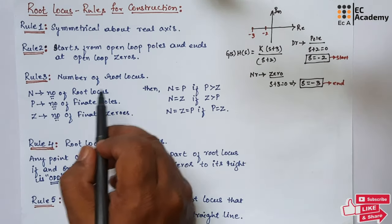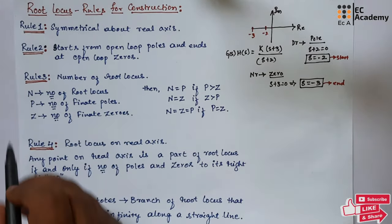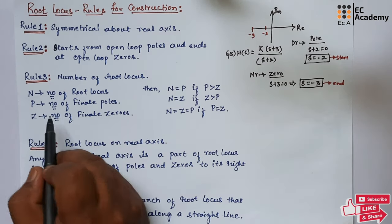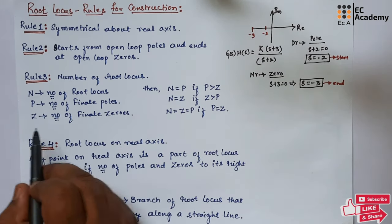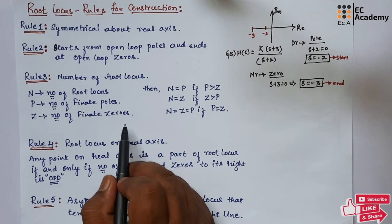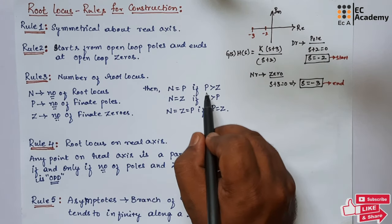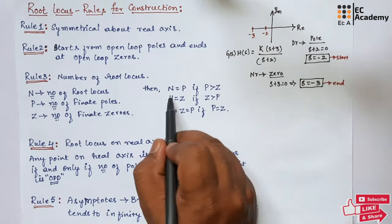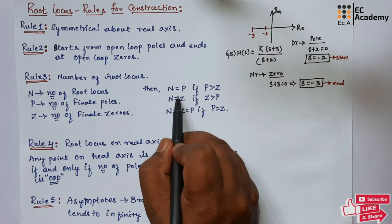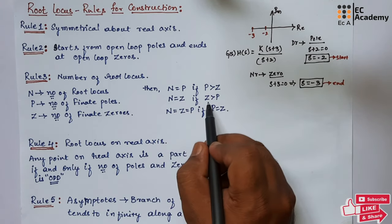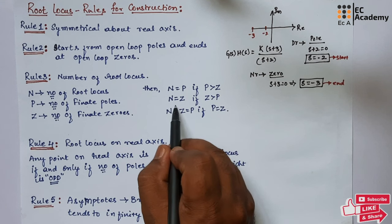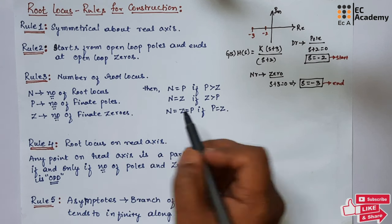Rule 3 is about number of root loci. If N is the number of root loci, P is the number of finite poles, and Z is the number of finite zeros, then if P is greater than Z, the number of root loci equals number of poles. If zeros are greater than poles, the number of root loci equals number of zeros.